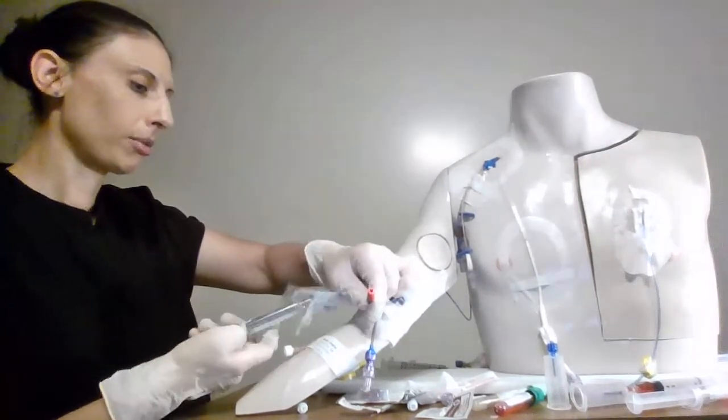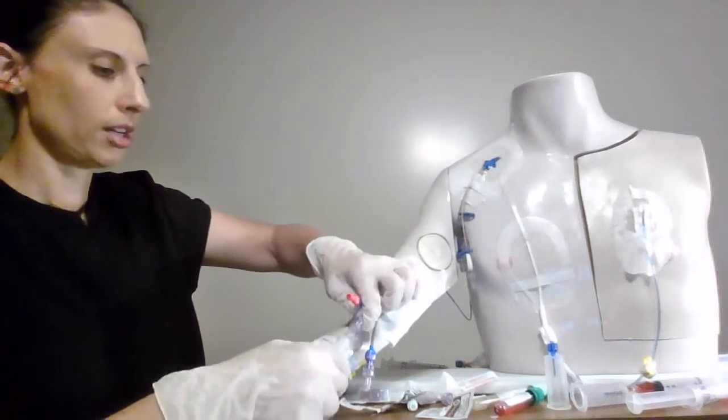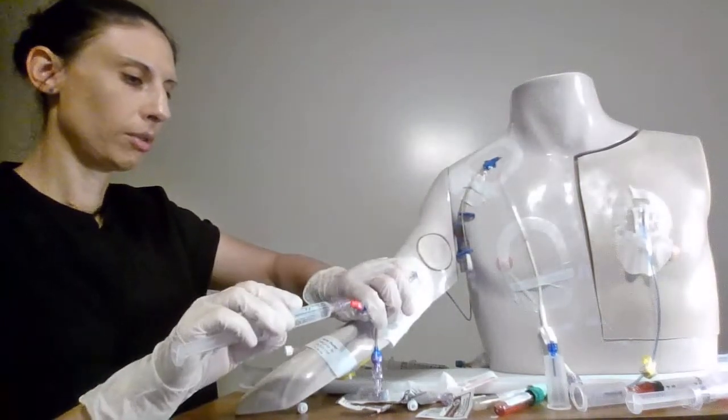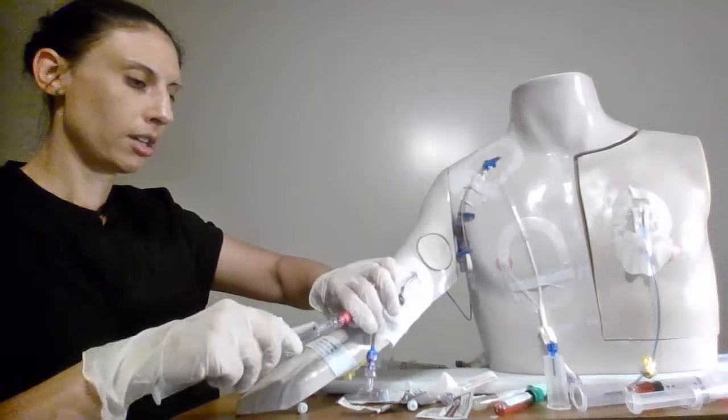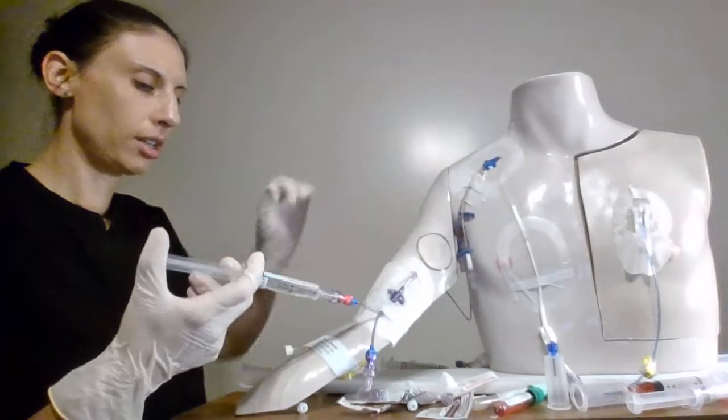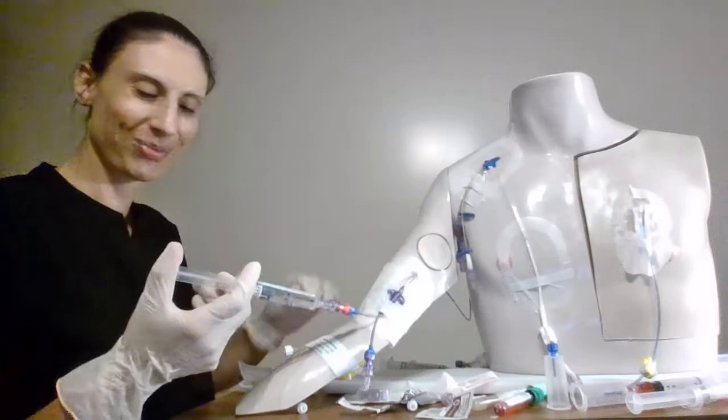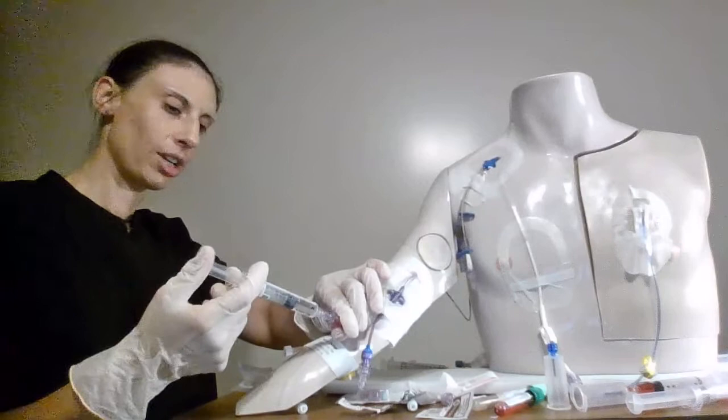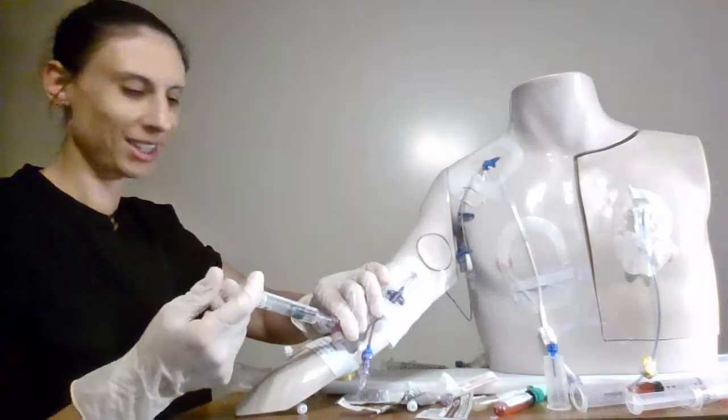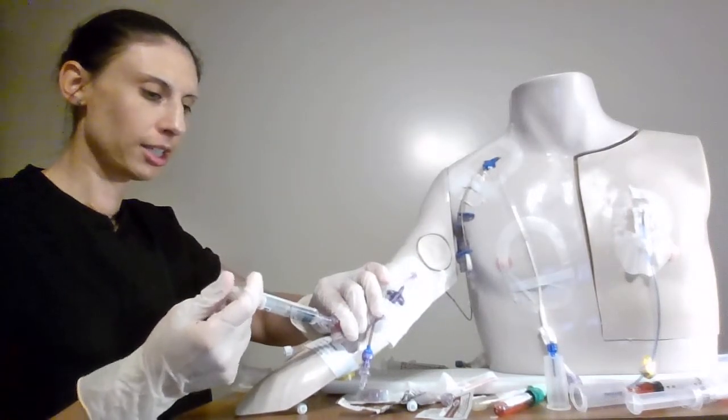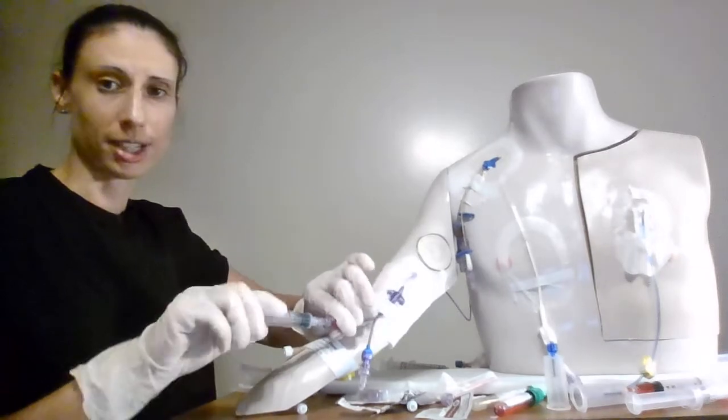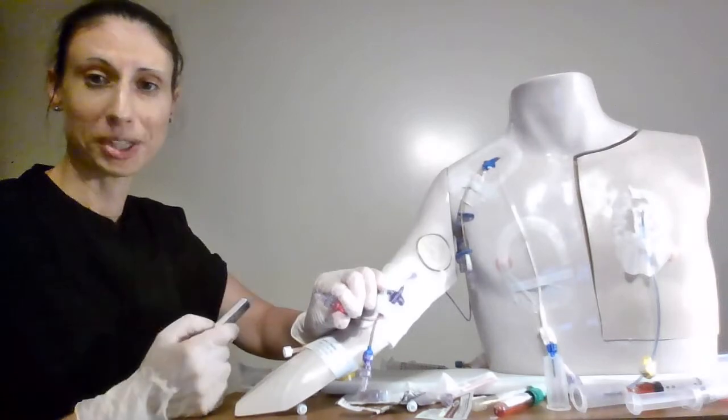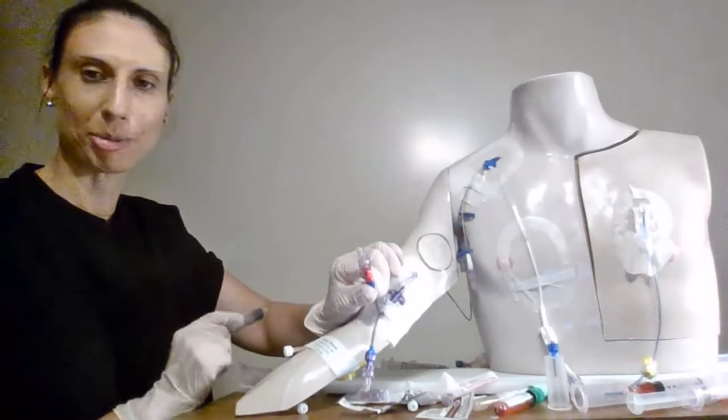We've got our cap ready to go. We're just going to take off that blue end. And we're going to attach that. And then we're going to flush. And we can use our push pause push pause one ml each time just to create some turbulent flow just to make sure that lumen is nice and clear. And that locks it. We only need 10 cc's because we didn't draw any blood. So it was just a normal saline lock flush with our cap change.